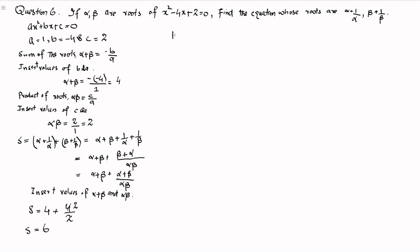Now the product of the roots of the required equation P will be (alpha plus 1 over alpha) multiplied by (beta plus 1 over beta). Expanding: alpha multiplied by beta is alpha beta, plus alpha multiplied by 1 over beta is alpha over beta, plus 1 over alpha multiplied by beta is beta over alpha, and 1 over alpha multiplied by 1 over beta is 1 over alpha beta.